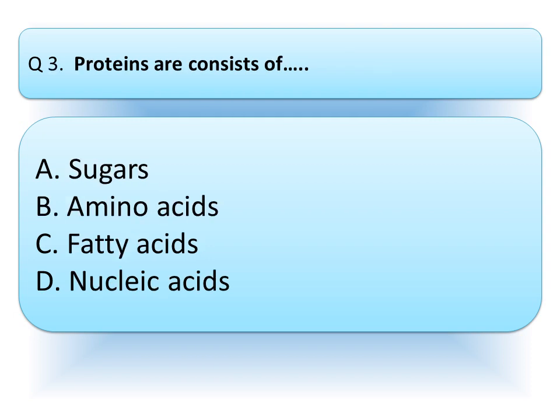Our next question is: proteins consist of — option A, Sugars; option B, Amino acids; option C, Fatty acids; or option D, Nucleic acids.